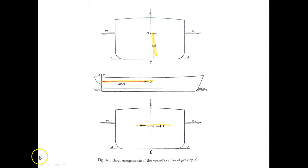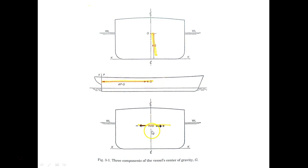The center of gravity is really in three dimensions. There's the vertical center of gravity, there's the longitudinal — fore and aft — center of gravity, and that center of gravity also has a transverse component. So there's a vertical component, a longitudinal component, and a transverse component. We're going to be discussing, in this lecture, the vertical component.